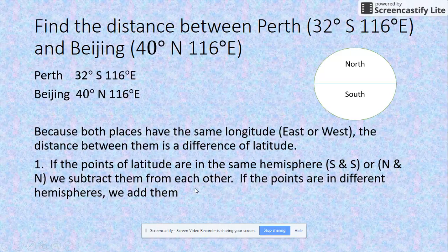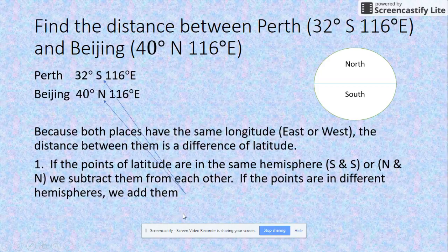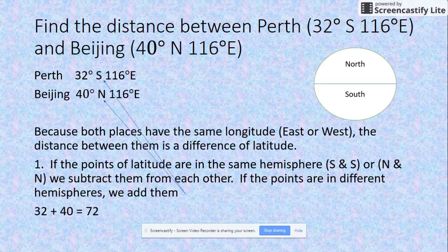Maybe that's something you can pause me on and write down. In this particular one, we've got to add them because one's in the north and one's in the south. So there's our north and south: 32 plus 40 gives us 72.